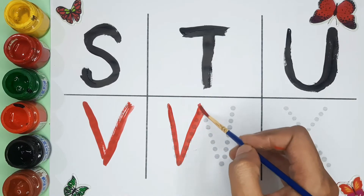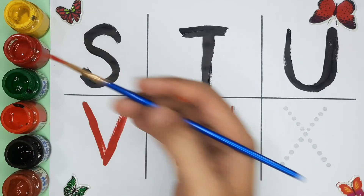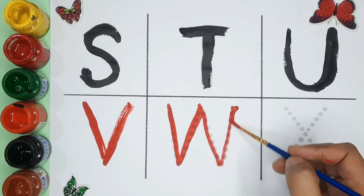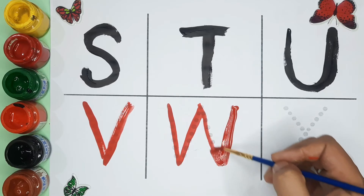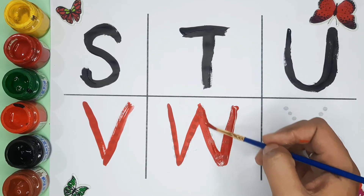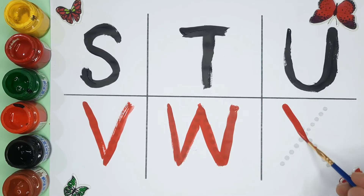W. W for watermelon. W for window. Red color.